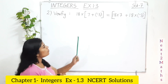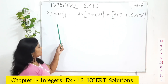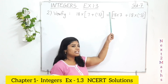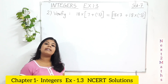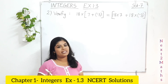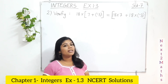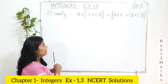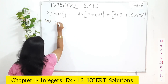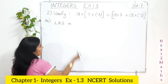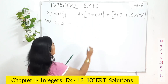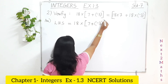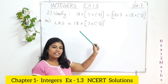It is given that both sides are equal, but we have to verify that. First, find the LHS answer, then the RHS answer. If both answers are equal, you have verified it. LHS: 18 multiplied by (7 + negative 3). Inside the bracket: 7 plus negative 3 is 7 minus 3, which equals 4. So we have 18 multiplied with 4.